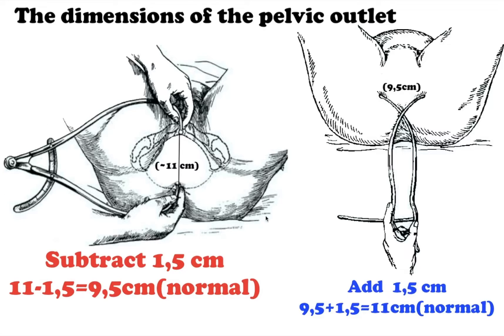The straight dimension is measured as the distance from the middle of the inferior margin of the symphysis to the apex of the coccyx. This is not the true straight dimension — from this value we need to subtract 1.5 cm.